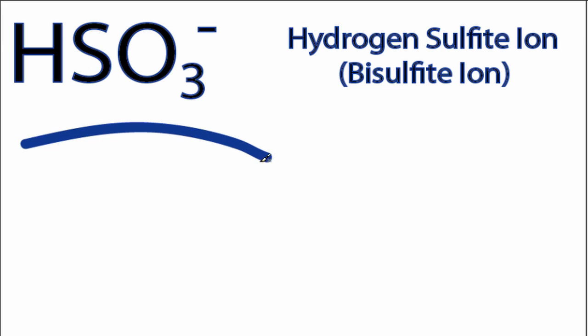This is the HSO3 minus Lewis structure. When we see the H out in front, we know that it's going to be attached to the outside of one of these oxygens when we draw the Lewis structure.